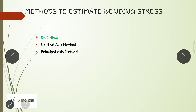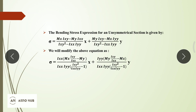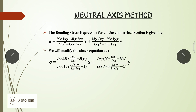The neutral axis method is a very easy method. Basically, we are just modifying or changing the equation of the bending stress. As you can see, the bending stress expression for an unsymmetrical section is given by this equation. We derived this equation in the earlier lectures and used it to find bending stress for unsymmetrical sections in the numerical problem.